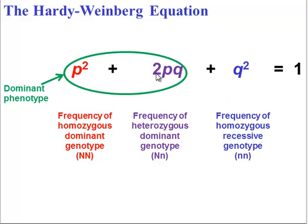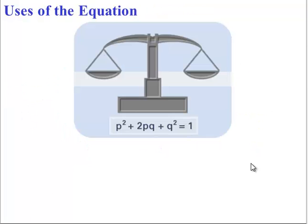Also, note that these two terms put together give us the dominant phenotype. So, what good is this equation?